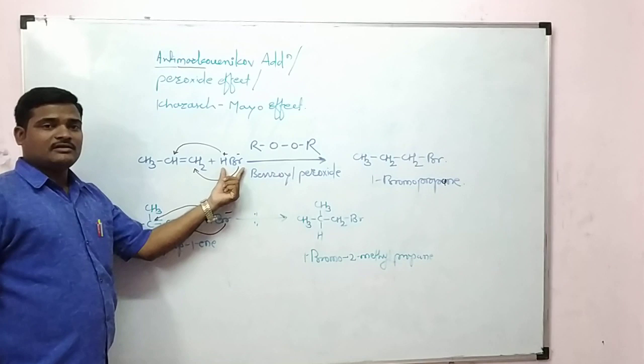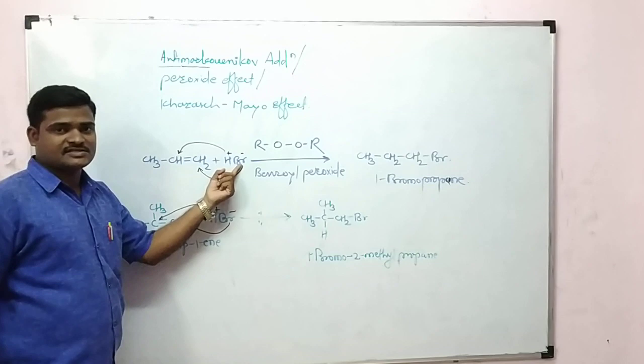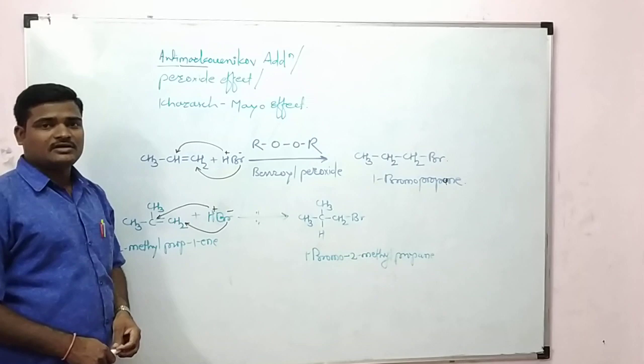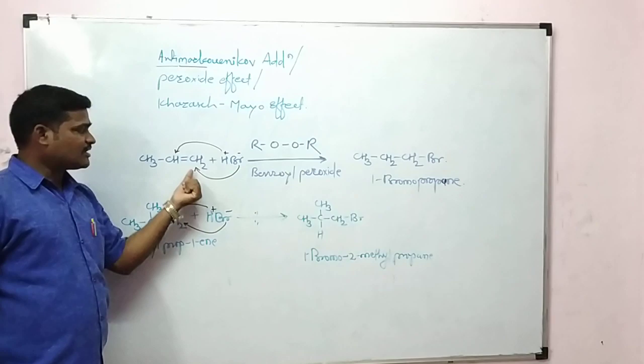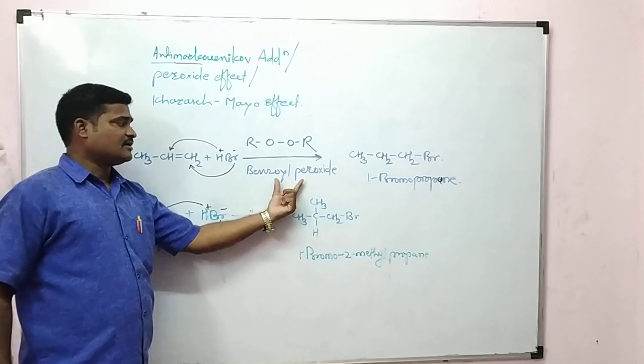In HBr, the positive part is H+ and the negative part is Br-. The statement of this anti-Markovnikov addition is: the negative part of the reagent adds to that carbon which carries more hydrogen atoms. That is opposite to the Markovnikov addition. Now in this case, the reactant used is benzoyl peroxide.